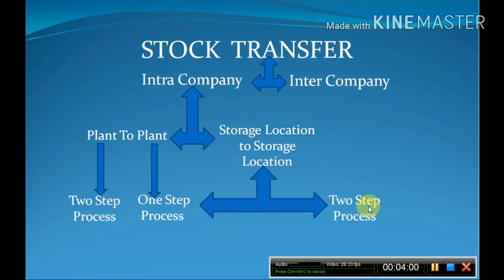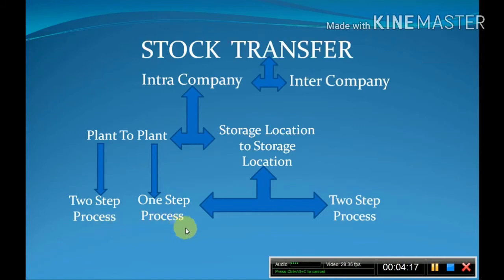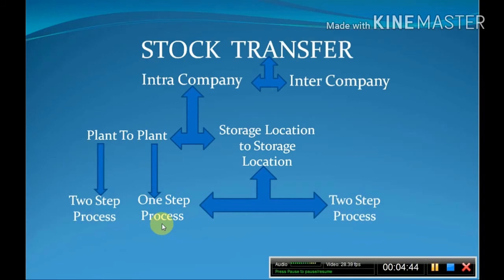In the case of plant-to-plant transfer, there are again two subtypes: one-step process and two-step process. In the one-step process, a certain quantity of material is requested by the in-charge of one storage location of one plant to another storage location of another plant — for example, from plant 1000 to plant 1001.